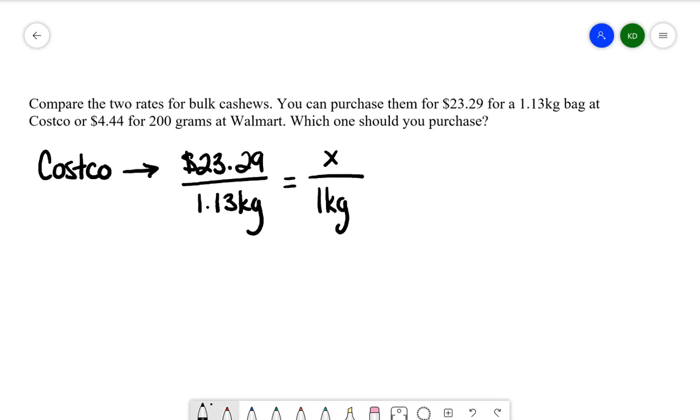How I cross multiply and divide is I'm always going to multiply the two numbers that are diagonally across from each other. So in this question, I'm going to be multiplying 1 times 23.29. We'll then divide by the third number that is left over. So to get x, I'm going to be going 1 kilogram multiplied by $23.29, and then dividing by 1.13 kilograms.